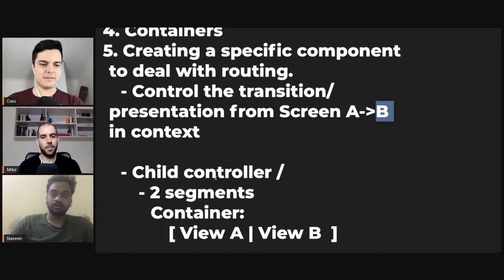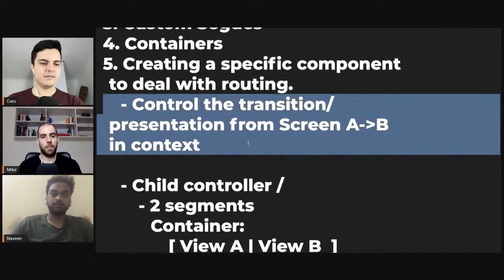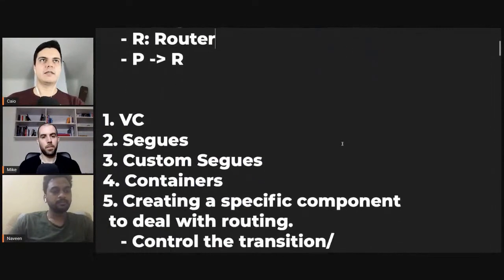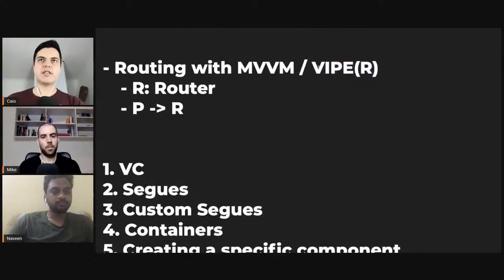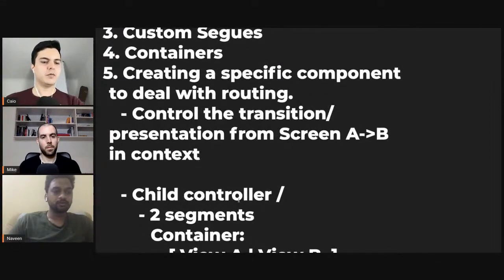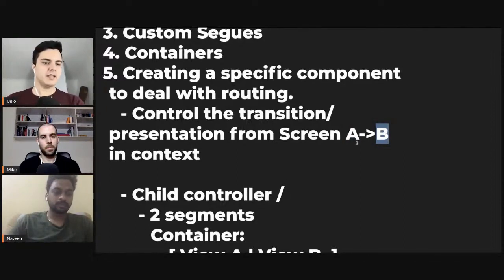Each flow can have a dedicated router. I like to call them flows — I usually call them flows. I try to avoid the term 'routers' nowadays because it got attached to the Viper template, and the way I see routers is a bit different than the Viper template, especially how the communication happens. I don't let my presenter talk to the router. I don't let my view model talk to the router. What I usually do is my view controller will have some kind of delegate, and the router or the flow will implement that delegate. Let's say A and B have delegates and my flow class will implement both delegates.